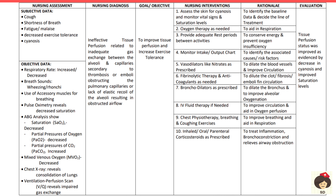Inhaled, oral, or parenteral corticosteroids treat inflammation and prevent bronchoconstriction. Inhaled corticosteroids are given via inhaler or nebulizer; oral by mouth; parenteral by intramuscular or intravenous injection. Evaluation: gas exchange improves as evidenced by normal respiration. The fourth diagnosis is ineffective tissue perfusion, related to inadequate gas exchange between alveoli and capillaries secondary to thrombosis or emboli obstructing pulmonary capillaries, or due to lack of elastic recoil of alveoli resulting in obstructed airflow — as in emphysema.